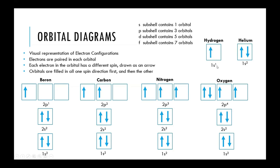In these electron orbital diagrams, you start off with one electron at that lowest energy level, that lowest orbital. With hydrogen you have one electron, and with helium there are two electrons — so you first write the up arrow in that lowest energy state, then complete the orbital with the down arrow.